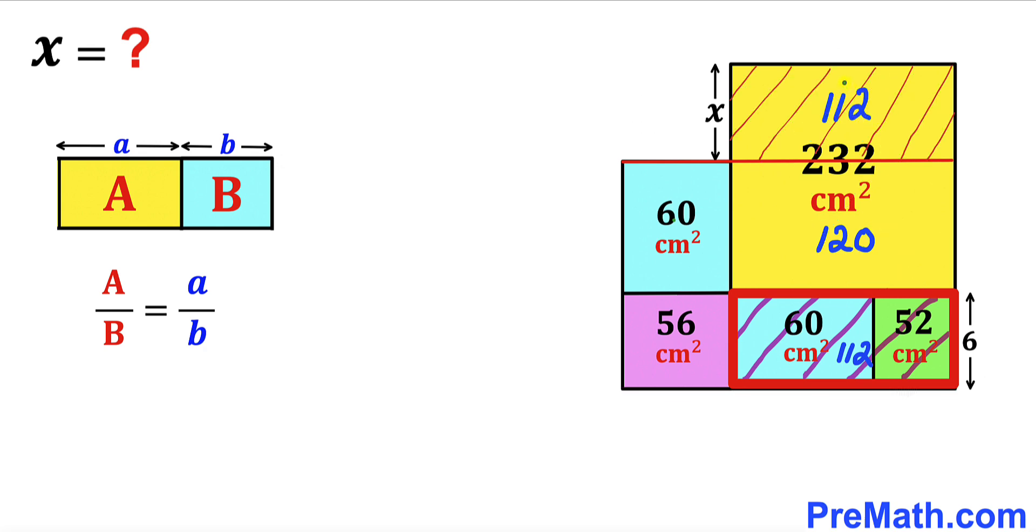So therefore we conclude that this partial rectangle turns out to be 112 centimeters square. And now let's go ahead and compare this rectangle and this big rectangle as well. Both have the area same 112 over here and 112 over here as well.